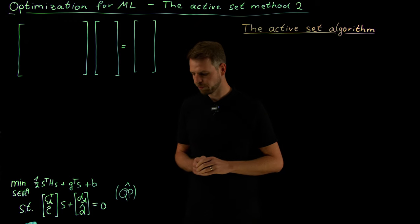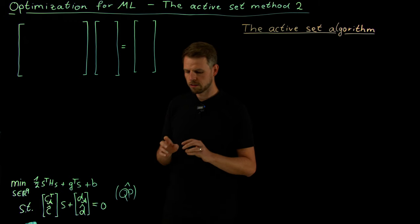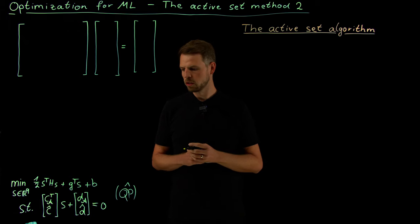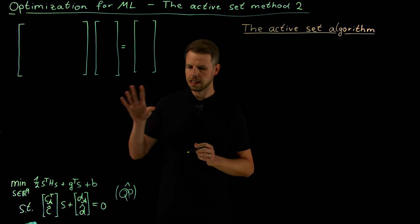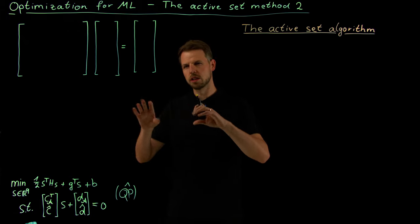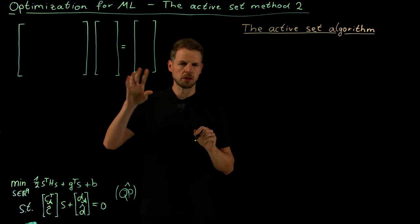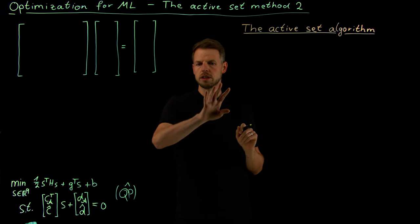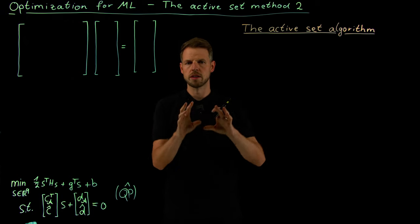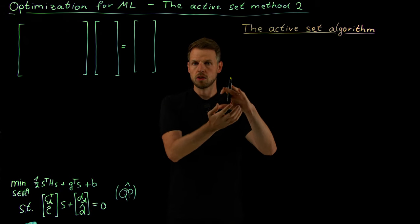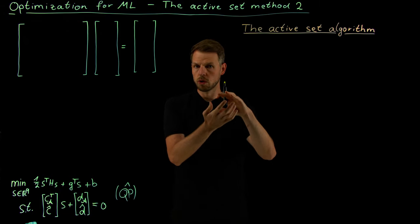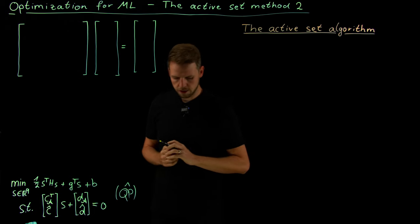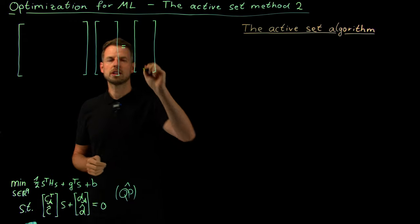Where we left off last video: we talked about the KKT optimality conditions and saw that these were in fact linear. The three lines were: the gradient of the loss function, plus the KKT multiplier times gradients of the equality constraints, plus multipliers times gradients of the active components of the inequality constraints.